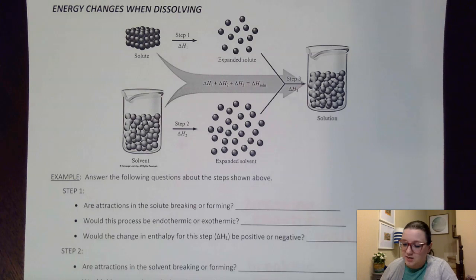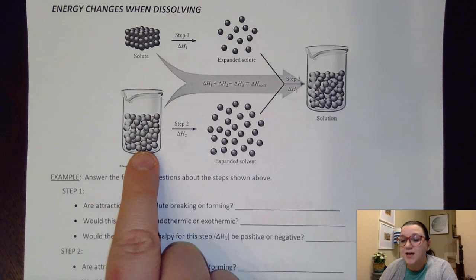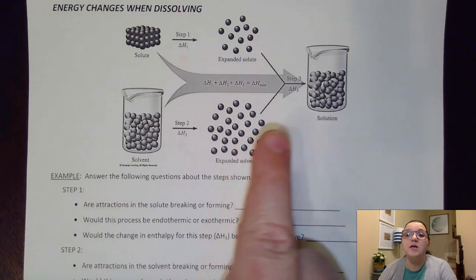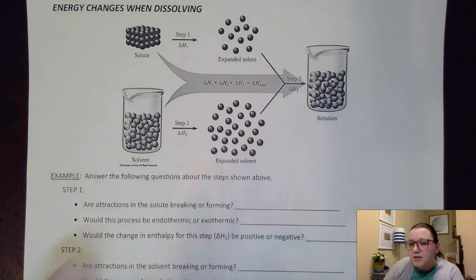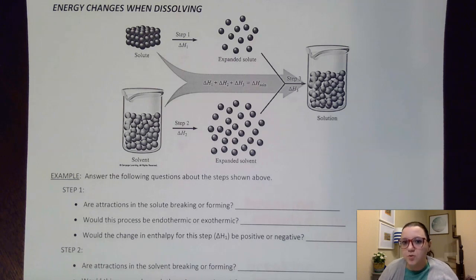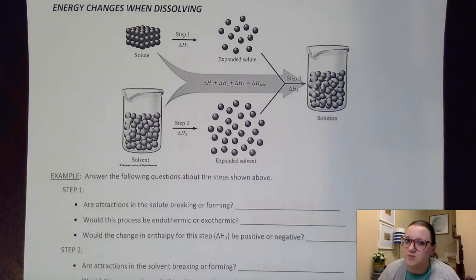Those steps are illustrated here, where they are showing a solute has to separate apart, our solvent has to separate apart, and then the solute and solvent need to interact with each other in order to form the new solution. For each of those three steps, we can ask ourselves: are attractions breaking or forming in that step? Would that step be endothermic or exothermic? And would the heat change of that step be positive or negative? Take a moment and pause the video and see if you can answer those three questions for each of those three steps illustrated in the picture.